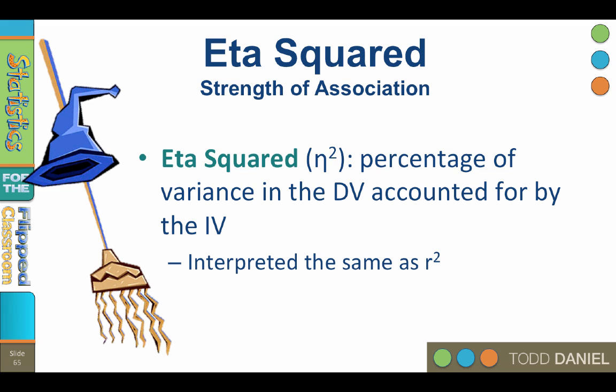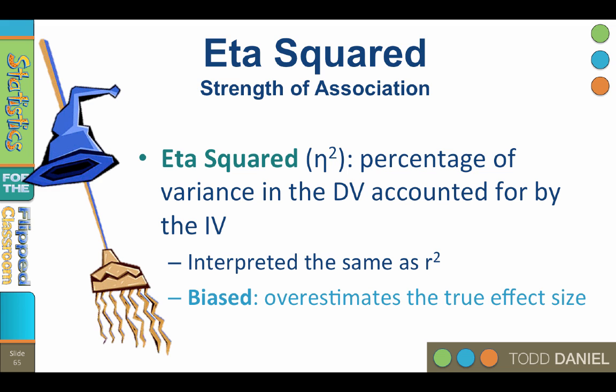Eta squared is equivalent to R squared and is interpreted in the same way. It explains the percentage of variance in the dependent variable accounted for by the independent variable. In our munchkins example, 66% of the complaints about wicked witches were explained by the region in which the munchkins lived. That's a lot. But eta squared tends to be biased in that it overestimates the true effect size.